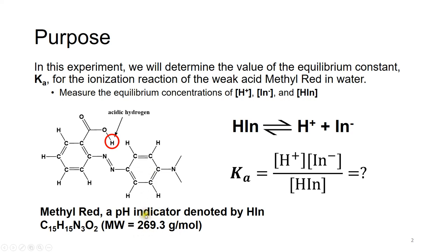We'll use this number later: the molecular weight of methyl red is 269.3 grams per mole. The equilibrium constant of any reaction is always products divided by reactants. We have two products, H⁺ and In⁻, so we put them on top. We have only one reactant, HIn, so we put HIn on the bottom.